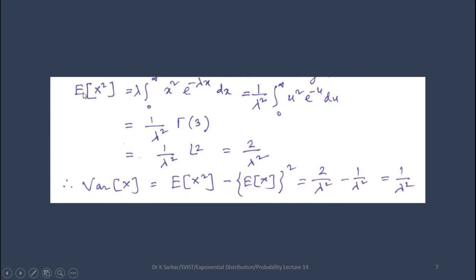Next, expectation of X squared is lambda times integral 0 to infinity x squared e power minus lambda x dx. Same as before, put lambda x equals u and you get the form as 1 by lambda squared gamma 3. Applying the gamma function properties, we get 1 by lambda squared factorial 2, which is 2 by lambda squared.